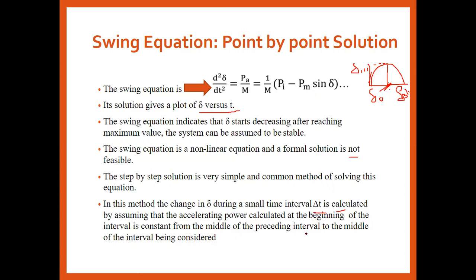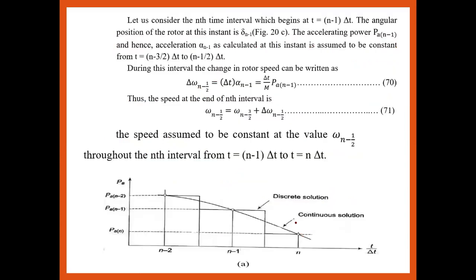Let us consider the n-th time interval beginning with the study. The n-th time interval starts at (n-1)·Δt. The angular position of the rotor at the instant delta_(n-1) is as shown in the figure. The accelerating power Pa_(n-1) is needed, and the acceleration is calculated at that instant from t_(n-1), giving Pa_(n-1) and delta(t).